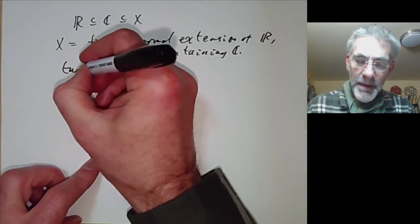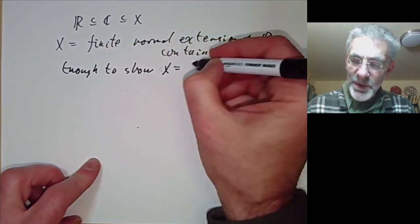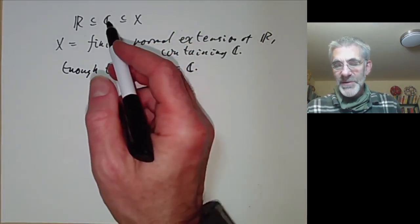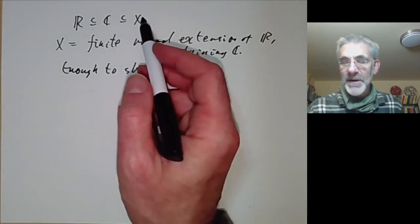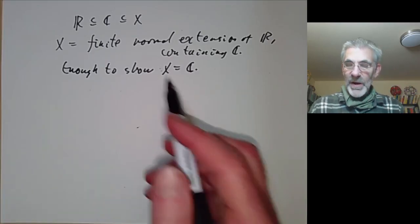Now to show C is algebraically closed, it's enough to show that X is equal to C because if C wasn't algebraically closed, we'd be able to find a non-trivial normal extension.